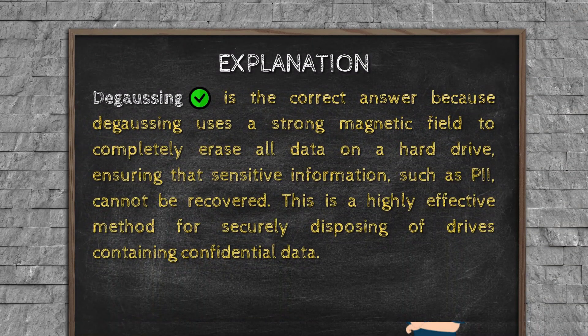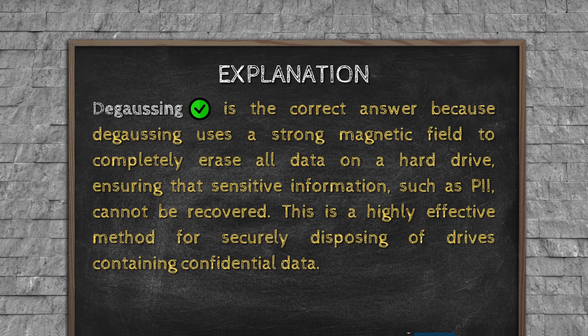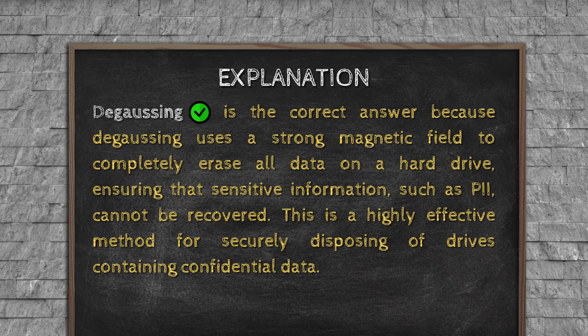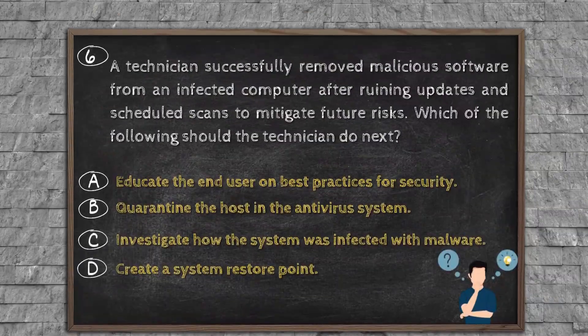Explanation. Degaussing is the correct answer because degaussing uses a strong magnetic field to completely erase all data on a hard drive, ensuring that sensitive information such as PII cannot be recovered. This is a highly effective method for securely disposing of drives containing confidential data.